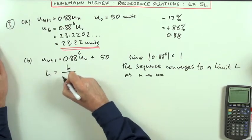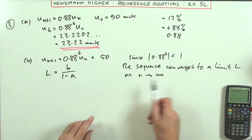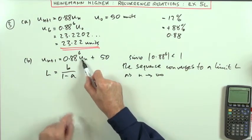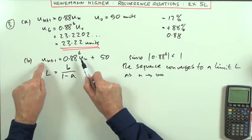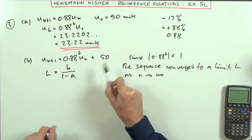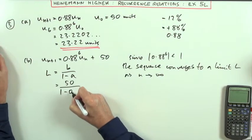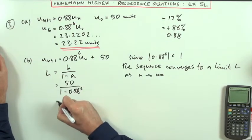And that limit's given by this. L equals B over 1 minus A, or you could just as well say, well, once you've reached your limit, the number you put in is the same as your number got out. So L equals that times L plus 50, and solve it. Makes no difference.